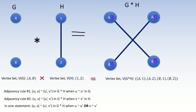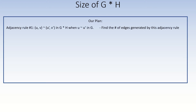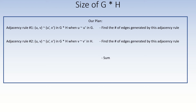Now let's get to our first property. What is the size — that is, the number of edges — of the conormal product of some two graphs G and H? Here's one approach: find the number of pairs of conormal product vertices that satisfy the first adjacency condition, add that to the number of pairs satisfying the second adjacency condition, and then subtract the number of pairs satisfied by both conditions.